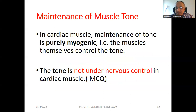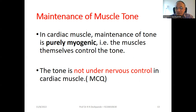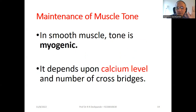In cardiac muscle, the mechanism of tone maintenance is different — it is purely myogenic, meaning muscles themselves control their tone and it is not under nervous control. In smooth muscle, the tone is also myogenic, but it depends on the calcium level and the number of cross bridges between actin and myosin filaments. This distinction is important for MCQ: skeletal muscle tone control is neurogenic, but cardiac and smooth muscle tone control is myogenic.